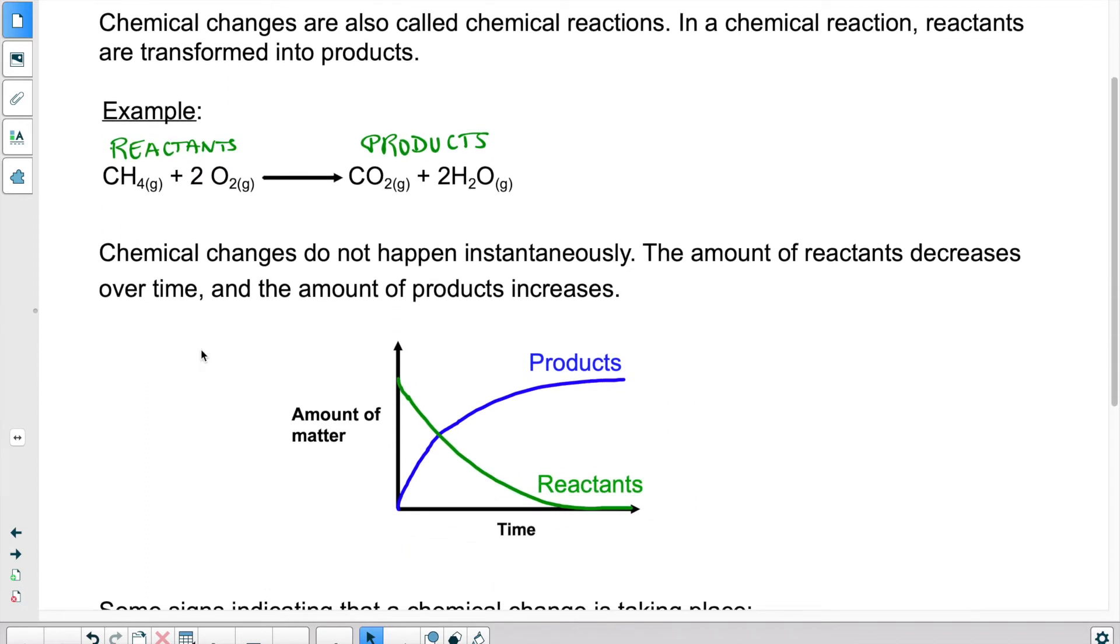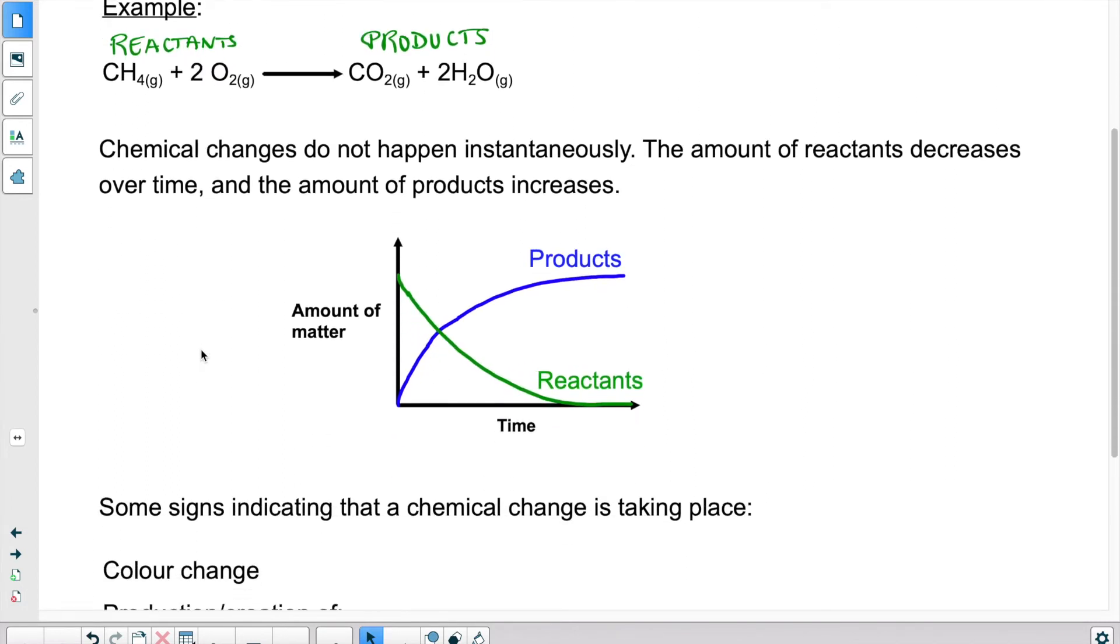Now during a chemical reaction, things don't happen instantly. So we start with a certain amount of reactants and those reactants collide together and through those collisions they get transformed into the product. So as they're colliding and transforming, their amounts, so their concentrations, will decrease until there are no more reactants left in the container where the reaction is occurring.